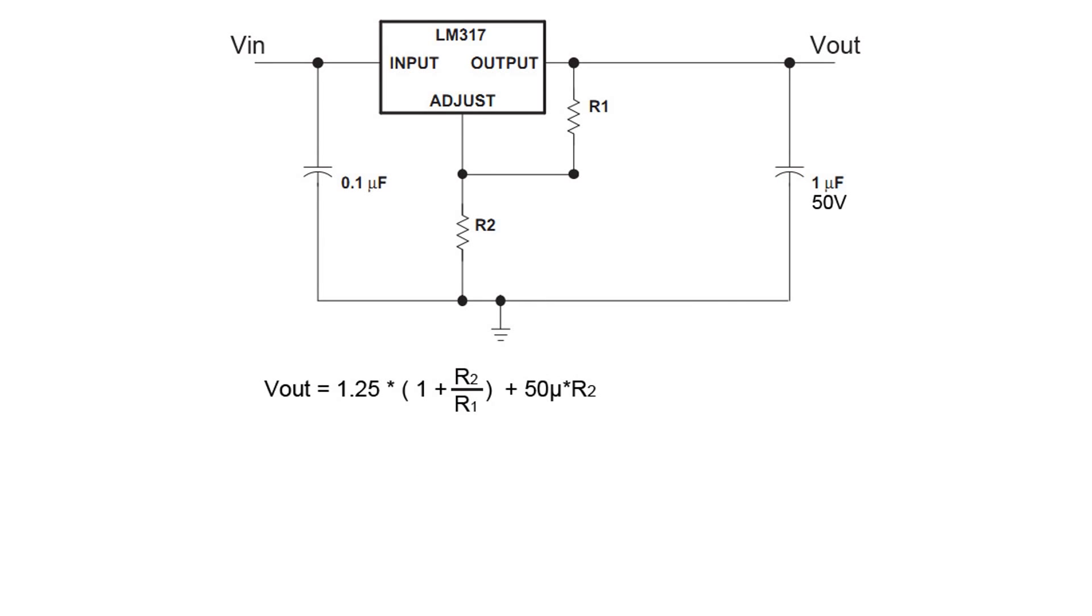Next we set the output voltage using two resistors labeled R1 and R2. You can use this equation to figure out the output voltage. But to start out with I'll show you the quick and easy way to use an LM317.